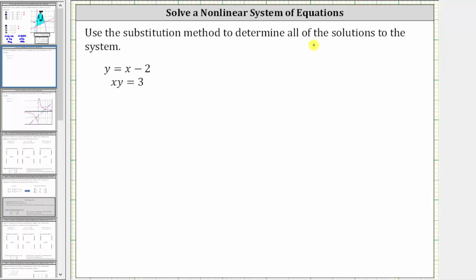Use the substitution method to determine all of the solutions to the system. We are given y equals x minus two, and x times y equals three.